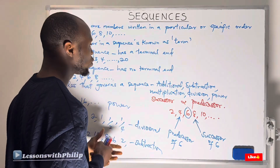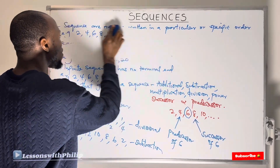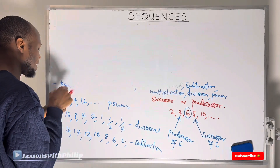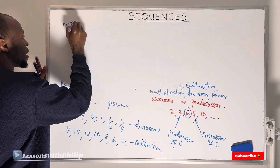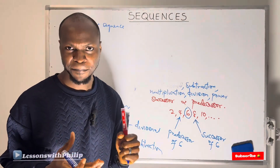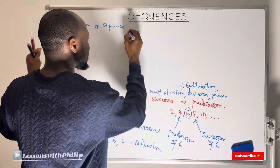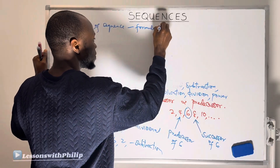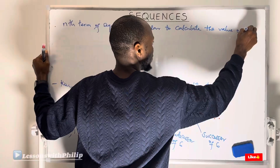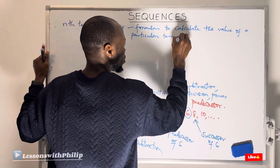Now, another thing we need to identify is what we call the nth term of a sequence. An nth term of a sequence is a particular formula that enables you to calculate the value of any term. It is a formula to calculate the value of a particular term of a sequence.